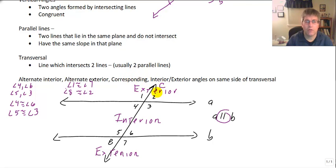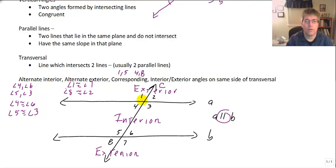Corresponding angles — we have a lot of corresponding angles. I look at those as every other angle on the same side of the transversal. So corresponding angles might be angles 1 and 5, or 4 and 8, or 2 and 6, or 3 and 7. I look at that as every other angle: 1, skip 4, 5. 4, skip 5, 8. 2, skip 3, 6. 3, skip 6, 7.